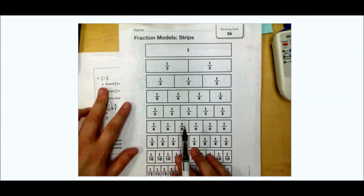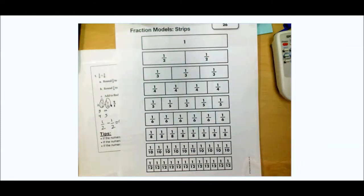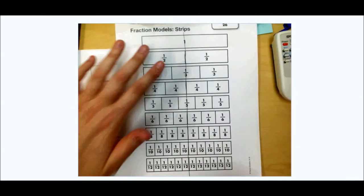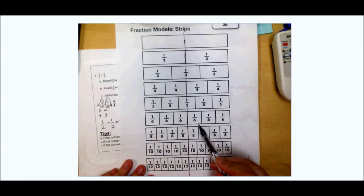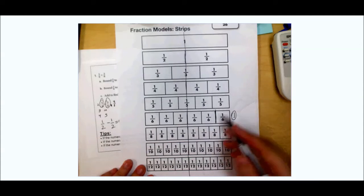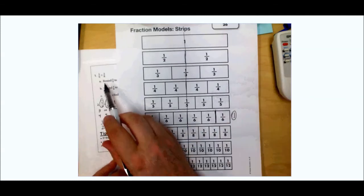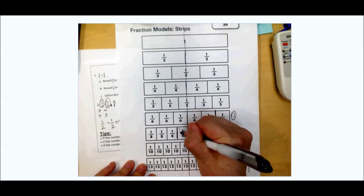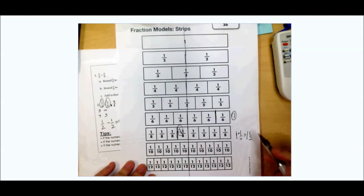For example, five-sixths plus three-eighths using fraction strips. This is one-half right here. Anything close to that line is one-half, anything close to this side is zero, anything close to this side is one. Five-sixths: one, two, three, four, five — it's right here, much closer to one. Three-eighths: one, two, three — three-eighths is right here, and that is about one-half. So one plus one-half gives one and a half.